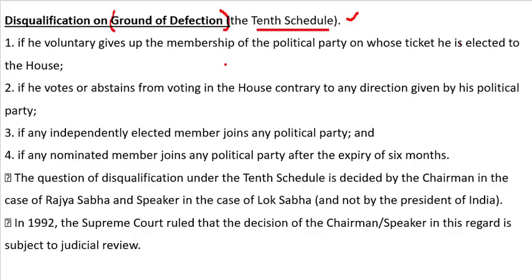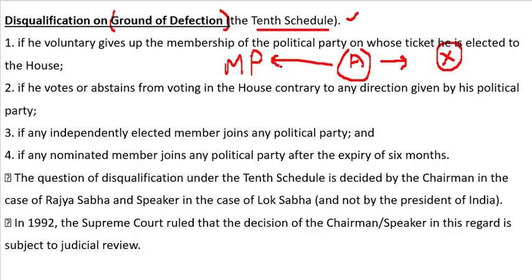First point: if a member voluntarily gives up the membership of the political party on whose ticket he was elected to the house, he will be disqualified. For example, if Person A was elected to Parliament from Party X and then leaves Party X, their membership as an MP is gone. This is the first ground of defection.